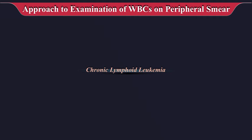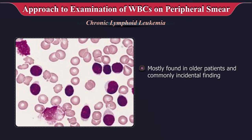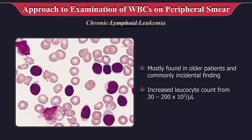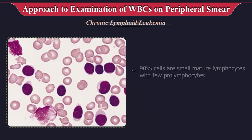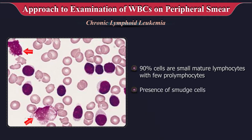Chronic lymphoid leukemia is mostly found in older patients and is commonly an incidental finding. Increased leukocyte count ranges from 30 to 200 × 10³ per microliter. Typical chronic lymphocytic leukemia shows 90 percent cells as small mature lymphocytes with few prolymphocytes, and presence of smudge cells is characteristic.